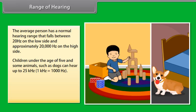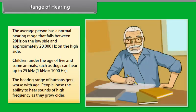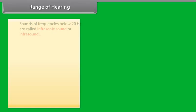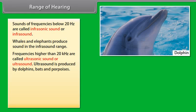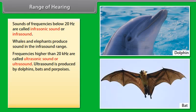Hence, the distance between the cliff and the person is 1500 meters by 2, that is 750 meters. Range of hearing. The average person has a normal hearing range that falls between 20 hertz on the low side and approximately 20,000 hertz on the high side. Children under the age of 5 and some animals such as dogs can hear up to 25 kilohertz. The hearing range of humans gets worse with age. People lose the ability to hear sounds of high frequency as they grow older.